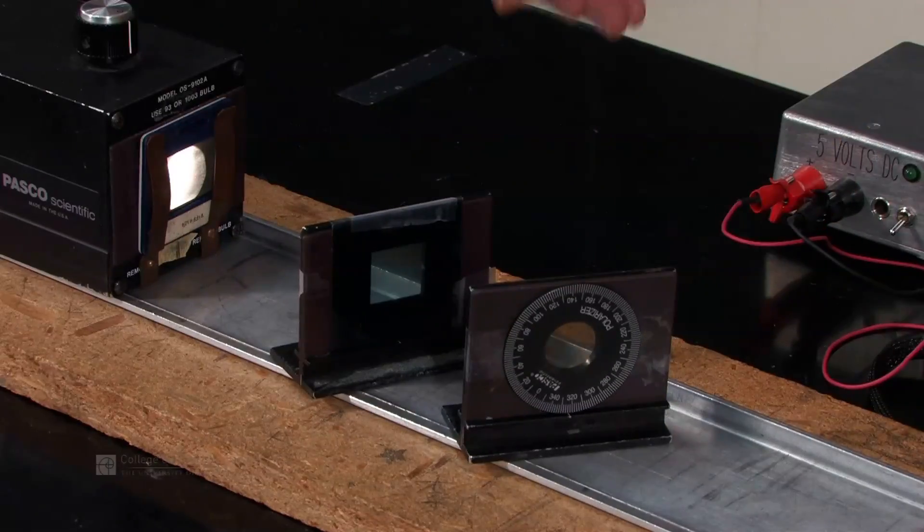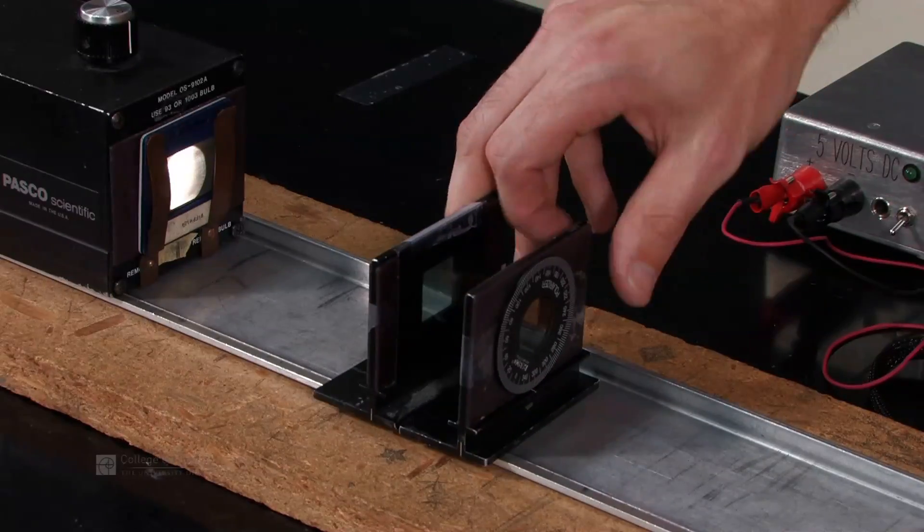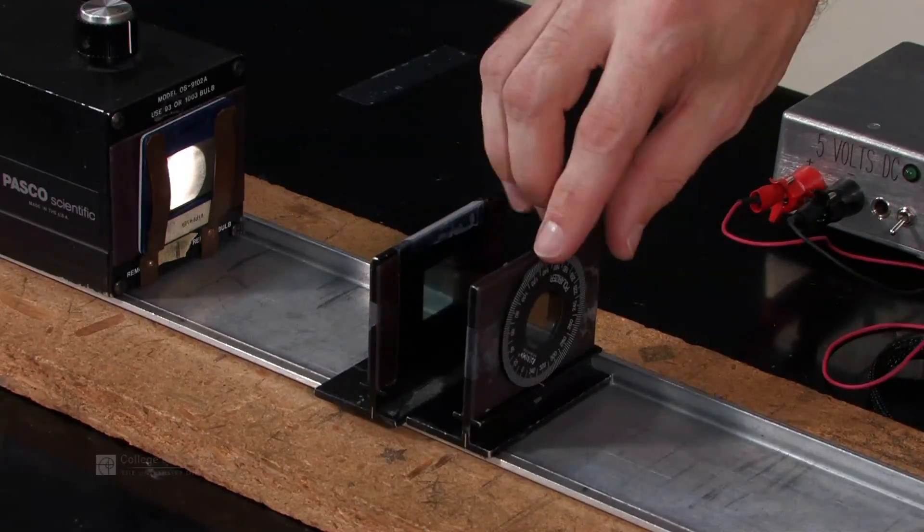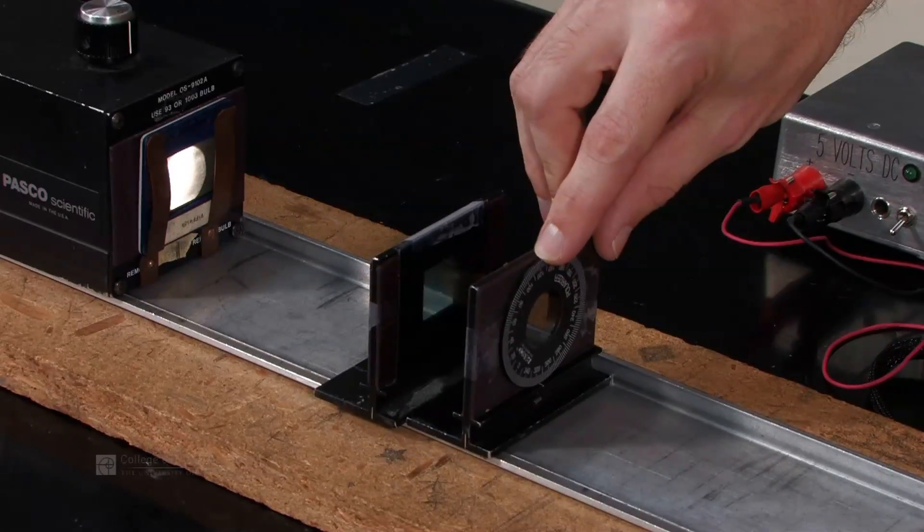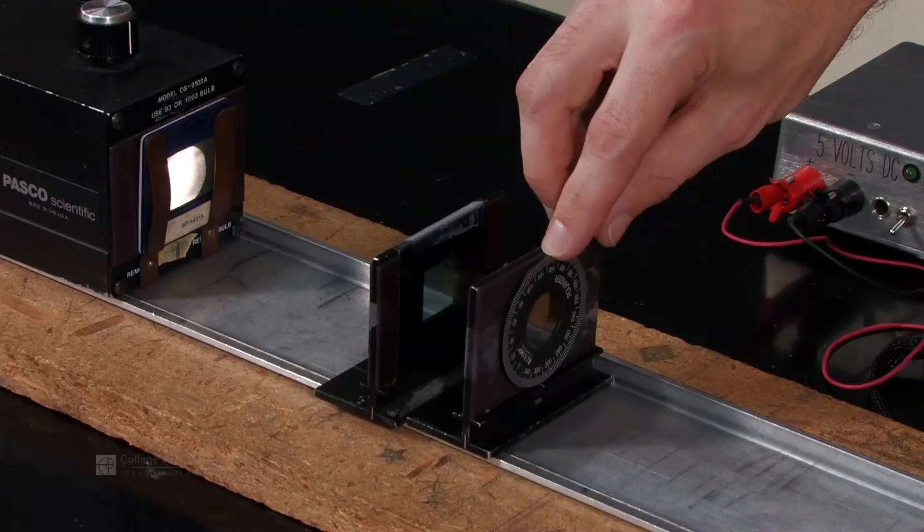So to figure out where the zero point is, and this is a very crucial point, you want to actually take the two, the polarizer and the analyzer, and hold it up to your eye and rotate this until you see the maximum amount of light coming through, and whatever that value reads.